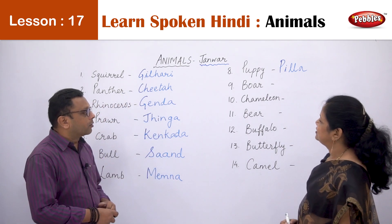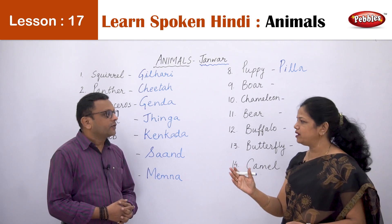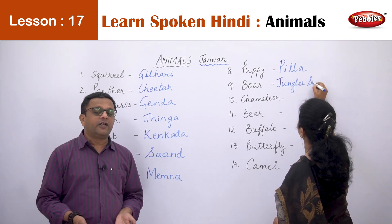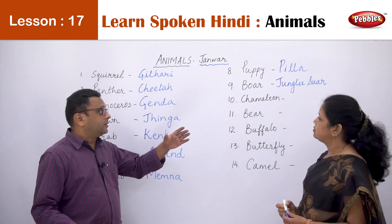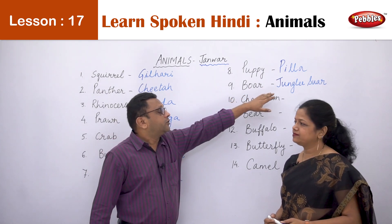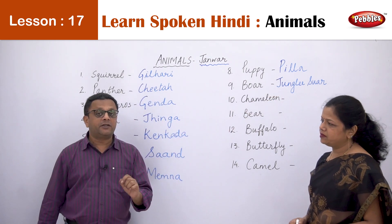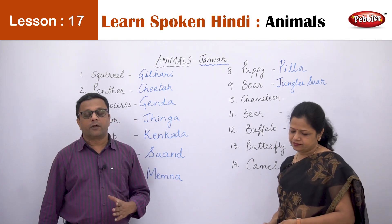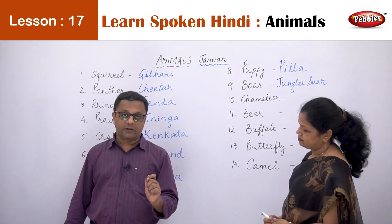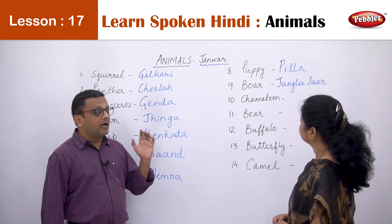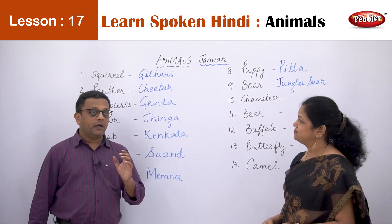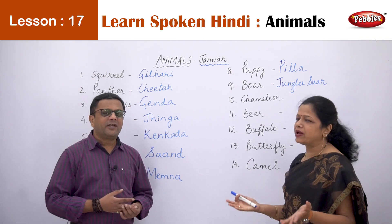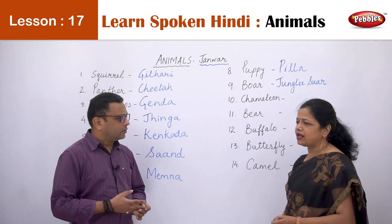The next is the boar. Boar is a wild animal and is called Jungli Sewer in Hindi — Jungli meaning one which lives in the jungle. The regular pig is Sewer and you can find it in cities and villages, but the wild boar is Jungli Sewer. Killing a wild boar requires a license, and hunting, poaching — everything is banned now in India. It is better to avoid it.